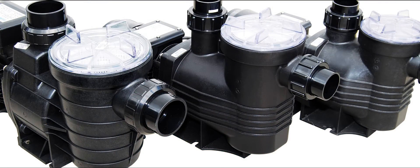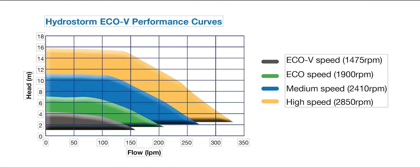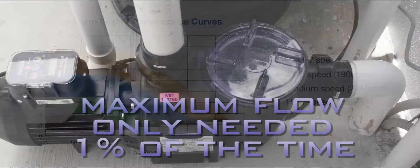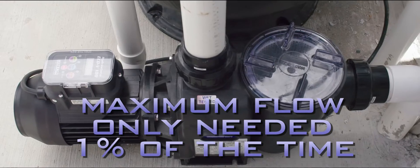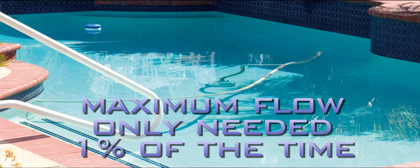Conventional water pumps are built to run at a single speed, with owners having to choose a model with enough grunt to meet the pool's maximum flow requirements. But this maximum flow is only required 1% of the time for servicing events like backwashing the sand filter or vacuuming the pool.